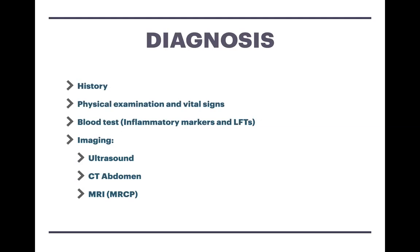Imaging is the gold standard form of diagnosing any of these biliary tree pathologies. The first-line imaging modality is an ultrasound scan — it's cheap, non-invasive, easy to obtain, there's no radiation, and it can find stones. A CT scan can be done, but often a CT scan cannot find stones, which is why ultrasound is preferred. A CT scan can be performed in cases of uncertainty in the diagnosis, for example if you're considering hepatic abscesses. The gold standard, however, is the MRI scan — specifically the MRCP — but it is expensive, not easy to get on a day-to-day basis, and there is some radiation involved.